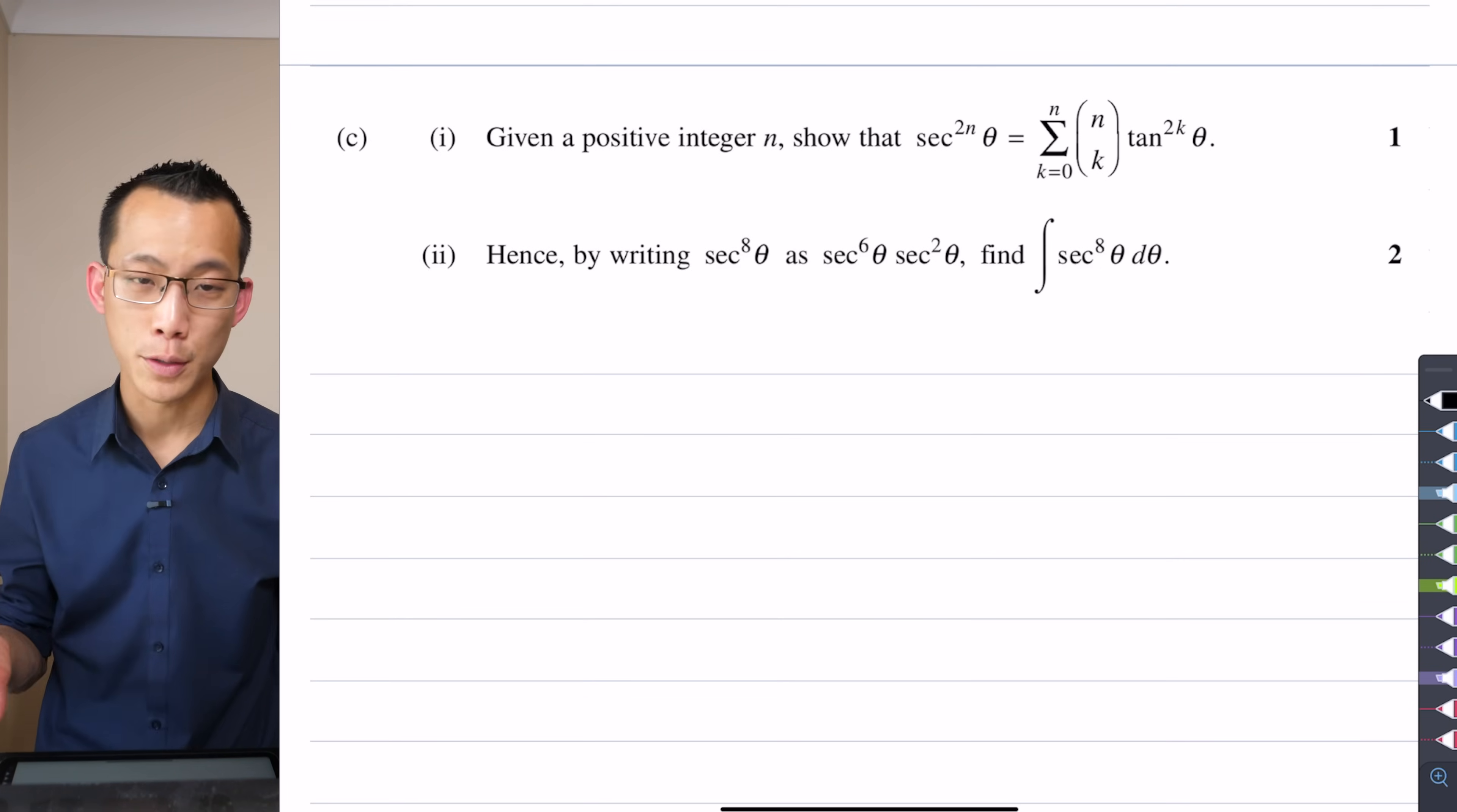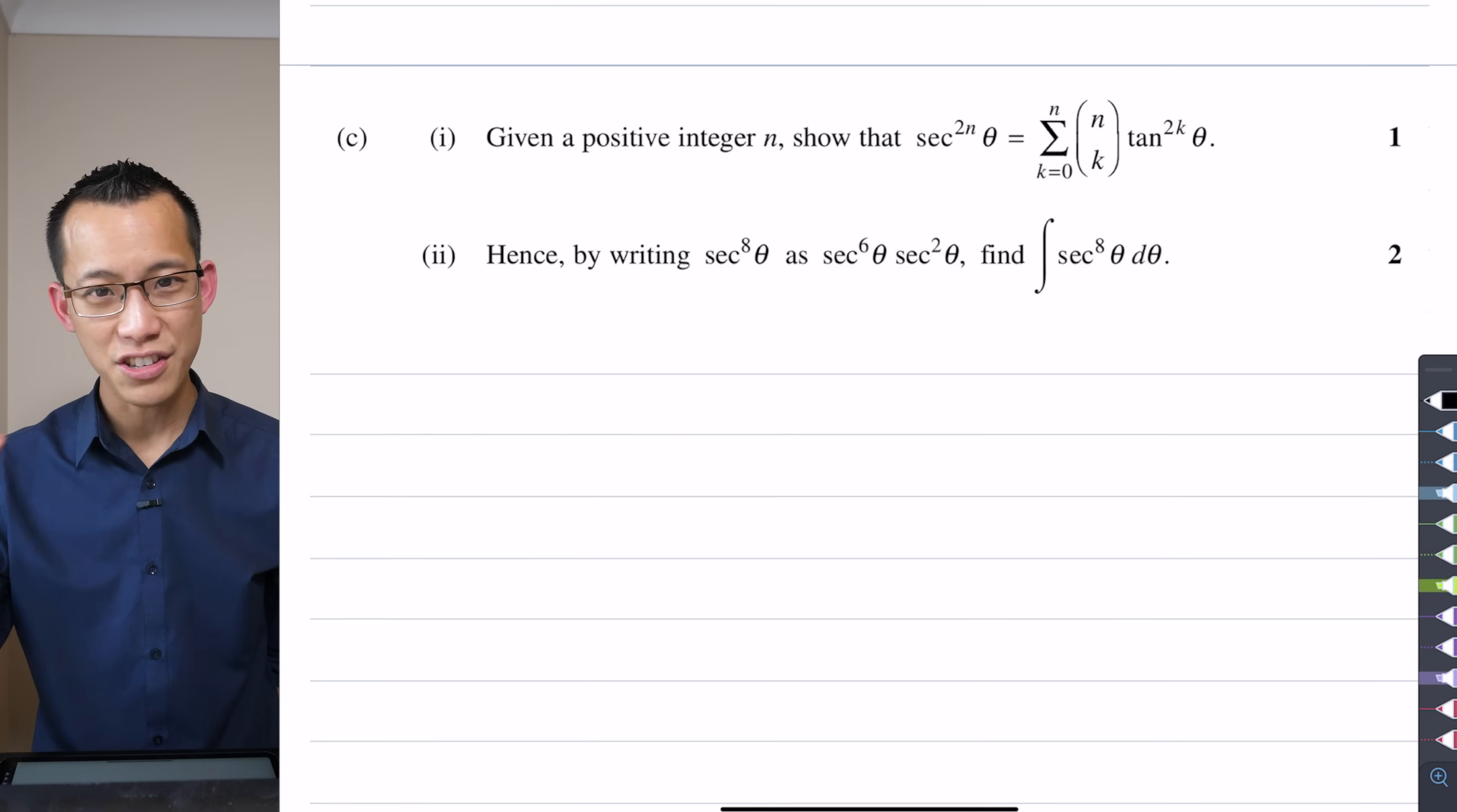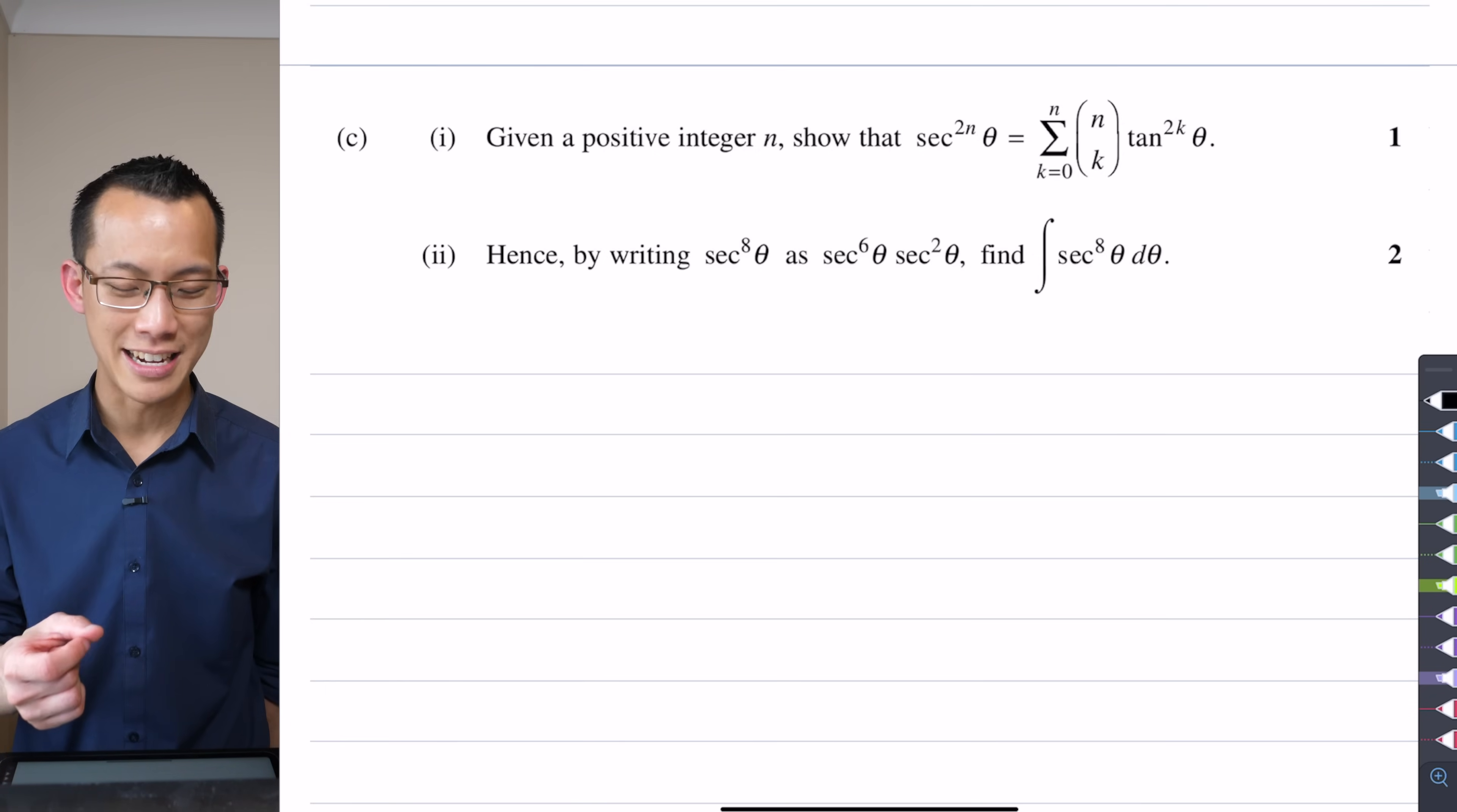This first question, or first part rather, once you see through where that n choose k notation came from, once you're willing to push past that just a little bit, you'll see why it's only worth one mark, and part two should fall out if you're careful with your algebra and your trigonometric identities, because it doesn't take someone who's an expert at extension two to see this is a trigonometric identities question.